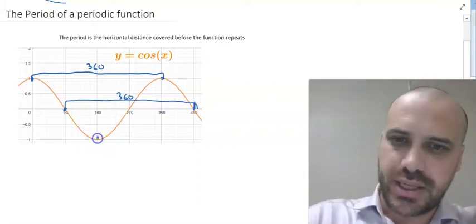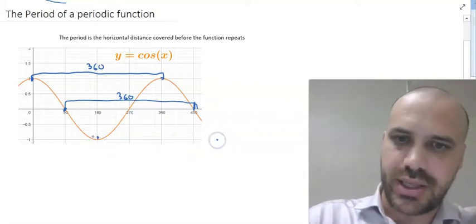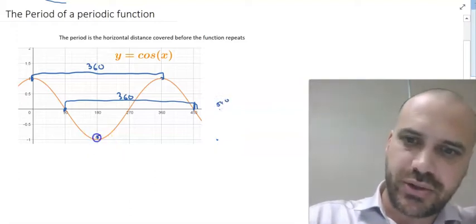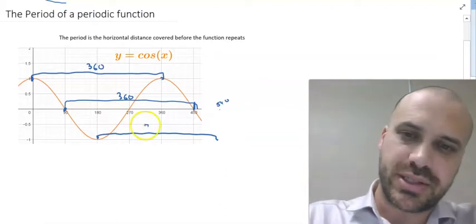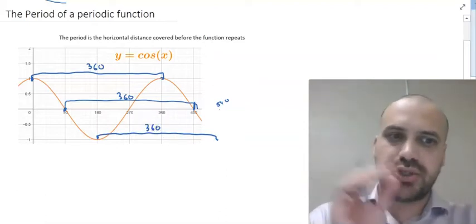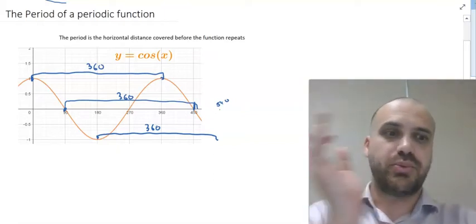I could also measure it from here to that next point here, which is 540, and if I measure it from that distance to that distance, no surprises, it's going to be 360. It doesn't matter how you measure it, you're just measuring from where it repeats to where it repeats.